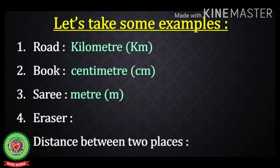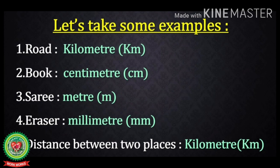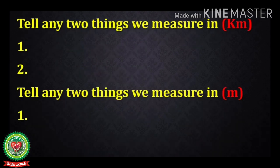Next is sari — it is measured in meters because it cannot be measured with a scale and it is not as lengthy as a road, so meters are appropriate. Next is eraser — it is something you can hold in your fingers only, very small, so we use the smallest unit: millimeters. Finally, distance between two places — as mentioned, there are milestones on the road where the distance is written in kilometers, so it is measured in kilometers.